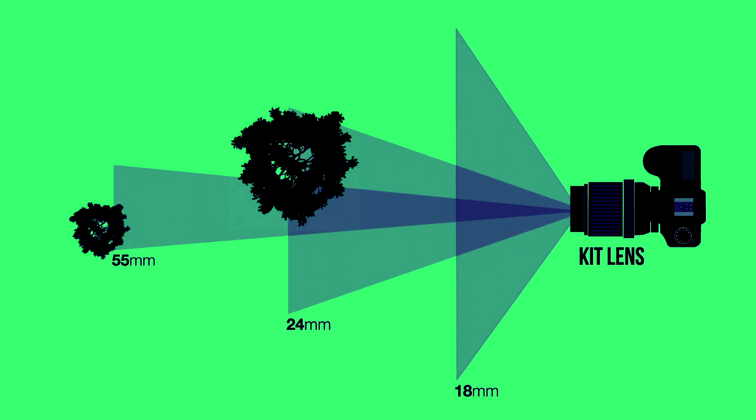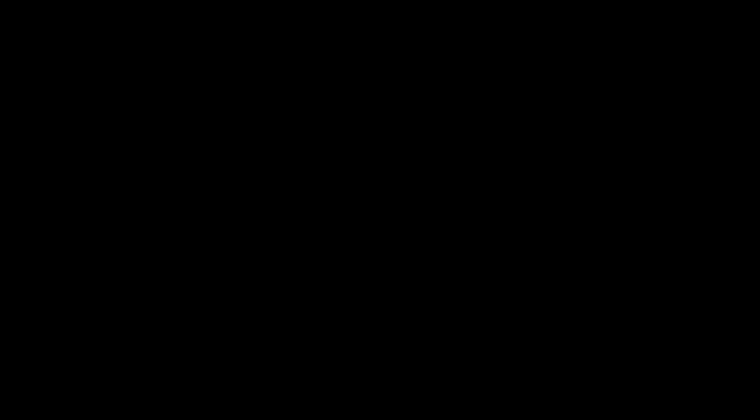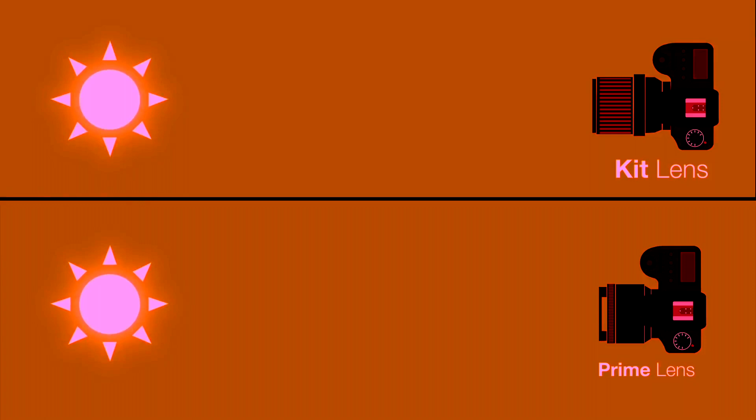Visualizing the 18-55mm focal length kit lens: the maximum aperture is f5.6 at 50mm, whereas the Nifty 50 offers f1.8 aperture at 50mm. This means it lets approximately 10 times more light in than the kit lens, making the prime lens much better in low light.